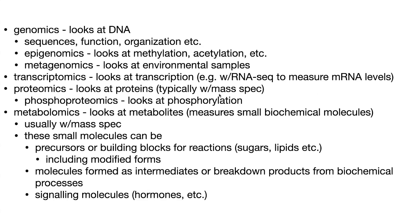Proteomics — now we're looking at the proteins, typically with mass spectrometry, which chops things into pieces and measures their mass-to-charge ratio, then compares that to a database of known mass-to-charge ratios of all the specific products that could be present. If there are modifications on the proteins, this will alter their mass and charge, allowing you to detect those modifications. There are different forms of proteomics that look at various types of modifications, such as phosphoproteomics, which looks at phosphorylation.